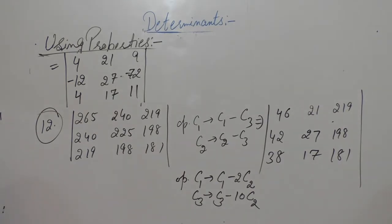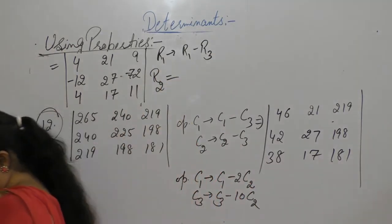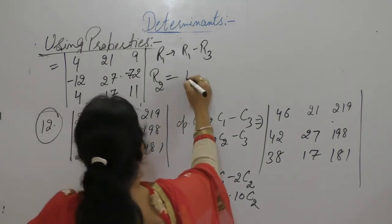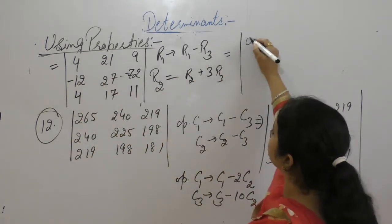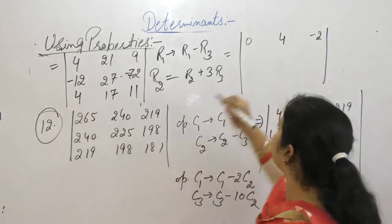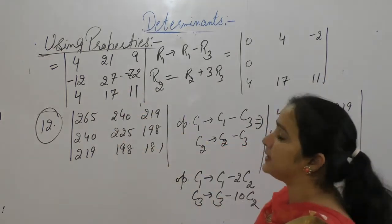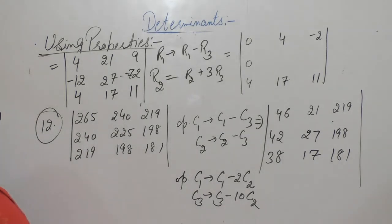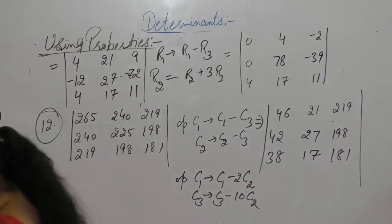In the next step, apply R1 as R1 minus R3 and R2 as R2 plus 3R3. For R1 minus R3: 4 minus 4 gives 0. For R2: 4 into 3 is 12, minus 12 plus 12 is 0. Also 27 minus 17 into 3 gives 0. Then 4 minus 2 gives 0, 38 minus 39 gives minus 1, and remaining entries are 4, 17, 11.